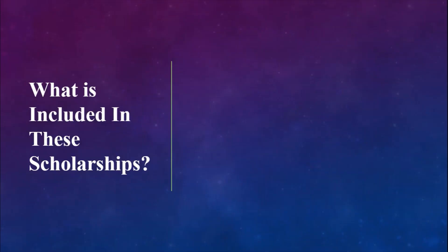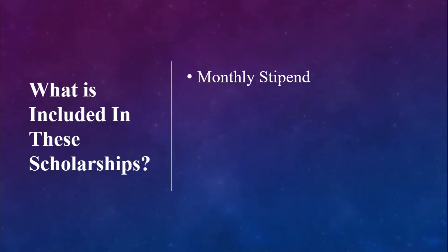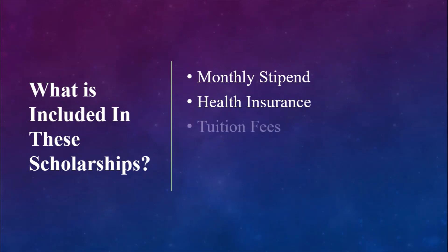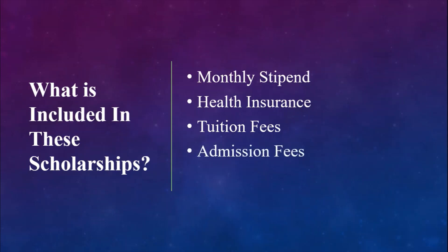The major thing is the monthly stipend, which you will get every month — most of the time in the last week of the month it is automatically transferred to your account. The next thing is health insurance, which is mandatory for all international students and is covered in the scholarship amount. The third thing is tuition fees, which are also covered. Some universities offer full tuition fee scholarships for international students recommended by the professor. Most of the time professors also provide the admission fees, which can be around five hundred dollars or more.